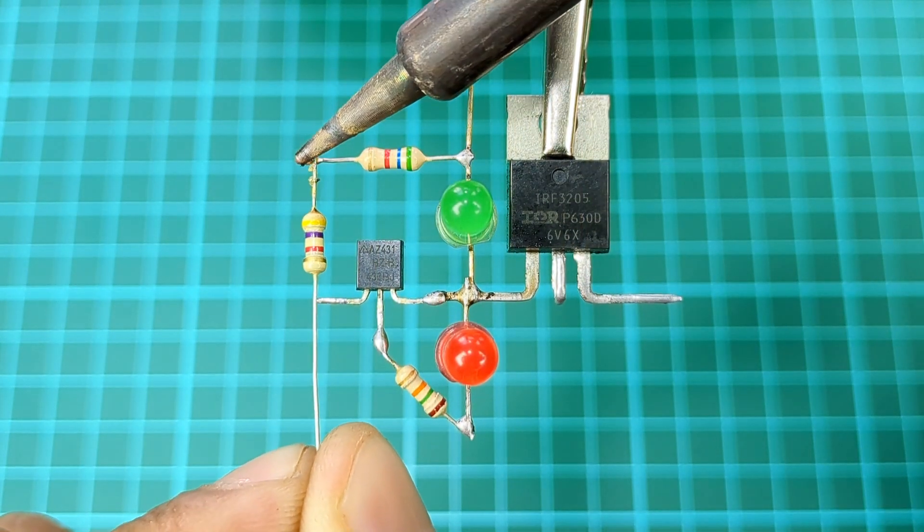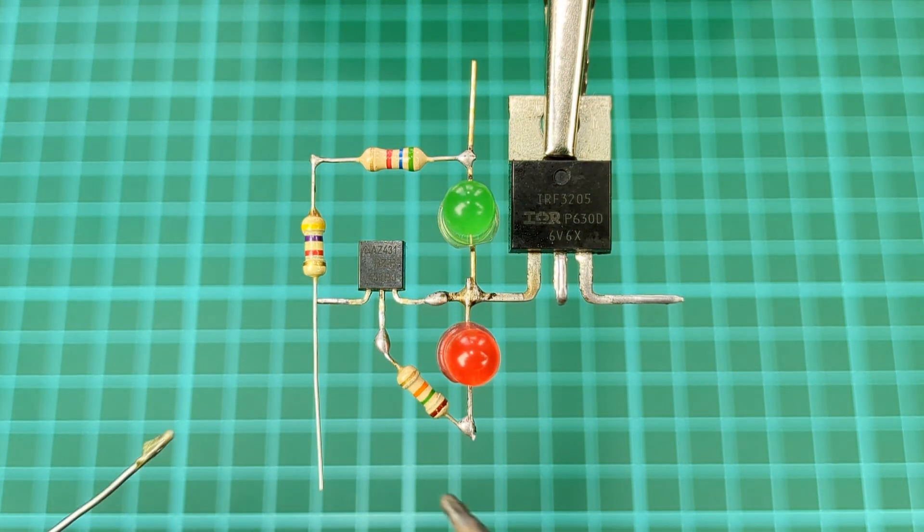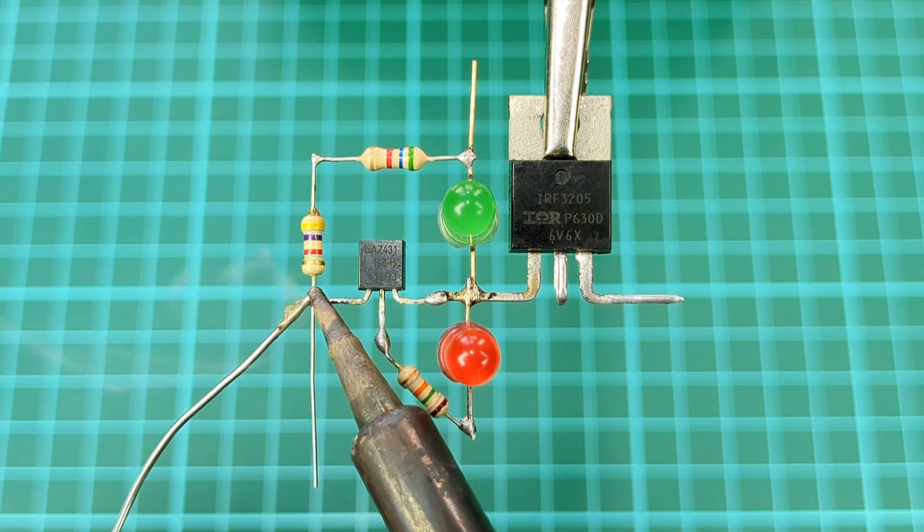Now take a 4.7 kilo ohms resistor and connect it from 5.6K resistor to the first pin of shunt regulator.